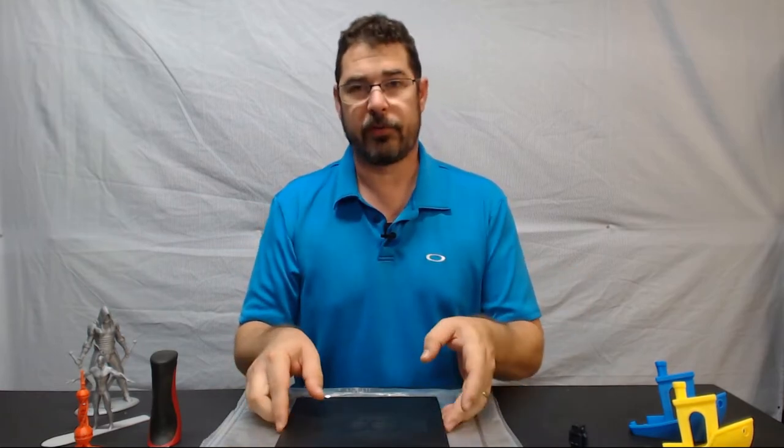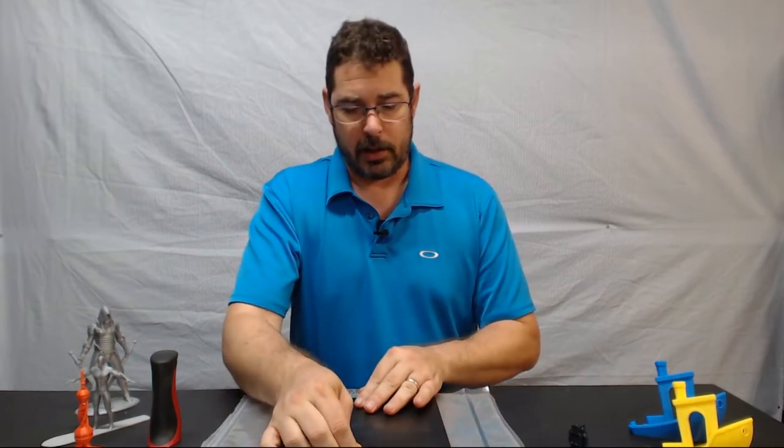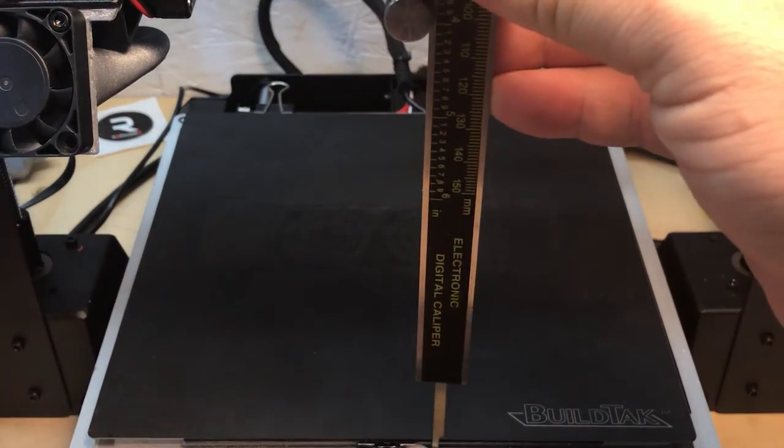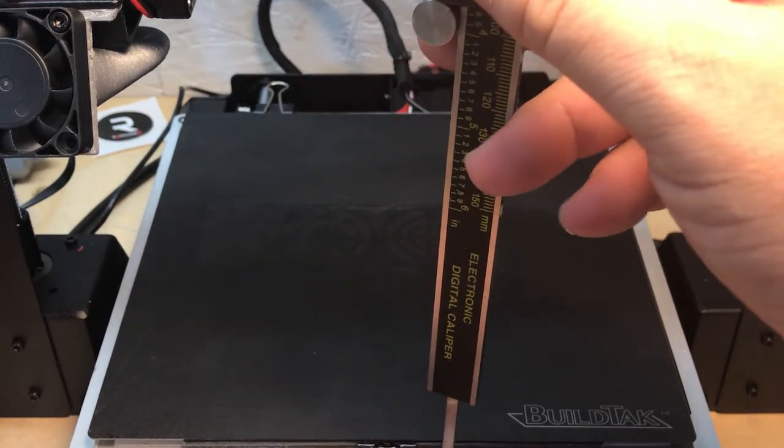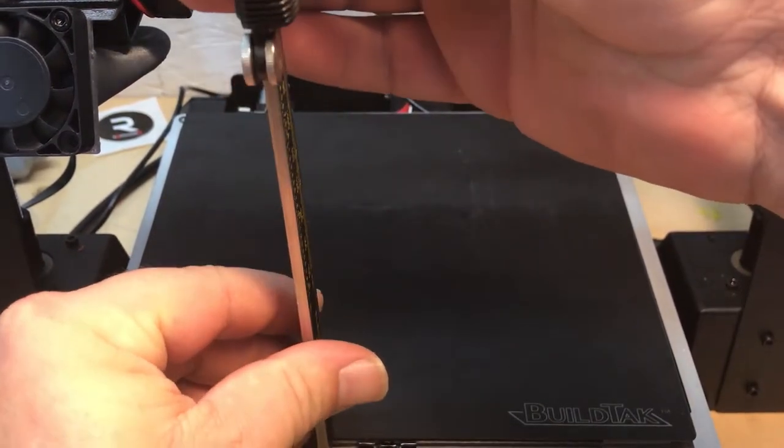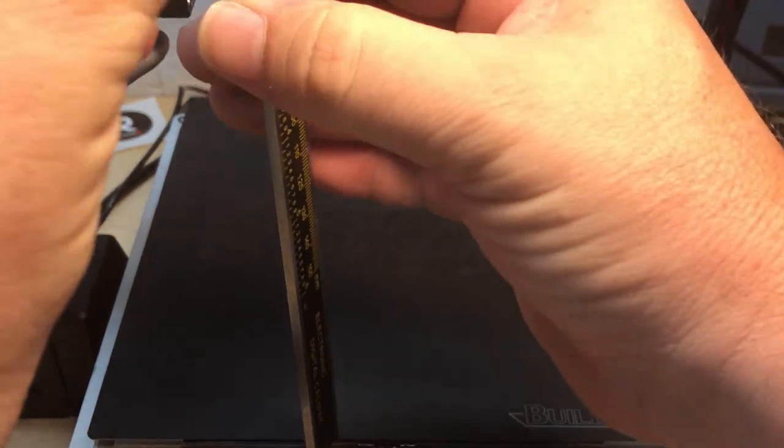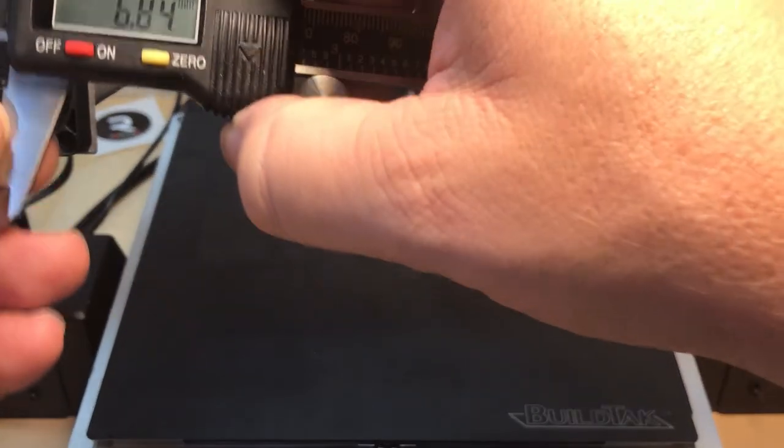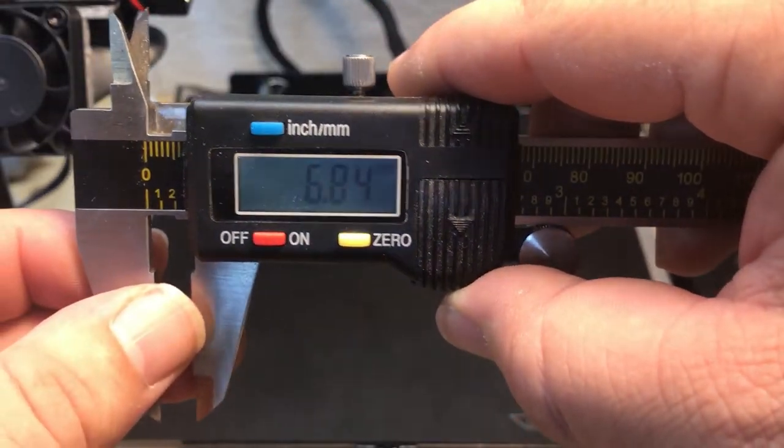It does add a bit of height to your bed, roughly seven millimeters or so including the glass. So it is worth noting and taking that into consideration that you may need to fabricate something to move your Z endstop to allow for that additional height if that's something that your printer doesn't allow you to do automatically.